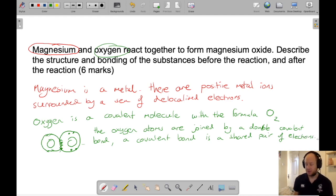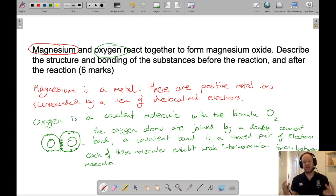So the oxygen atoms are joined by a double covalent bond, and I probably want to define what the covalent bond is. A covalent bond is a shared pair of electrons. Right, what about the rest of it though? Each of those molecules exhibit weak intermolecular bonds. So there are those, I'm just saying that there's weak intermolecular forces between each of those molecules. Remember, it's the weak intermolecular forces that are broken and not the strong covalent bonds.